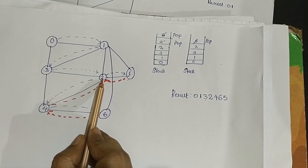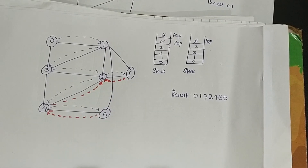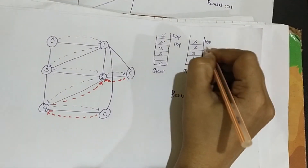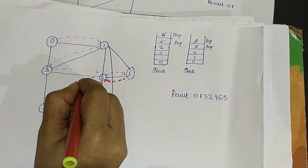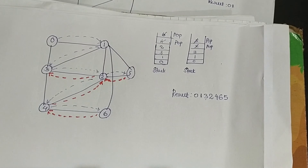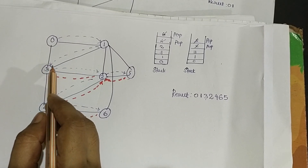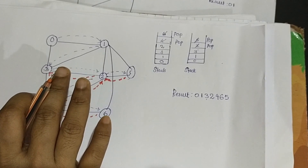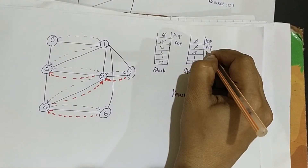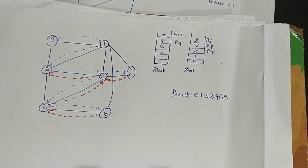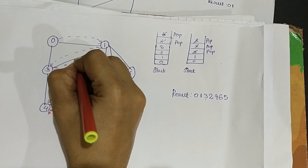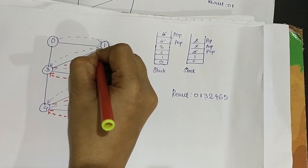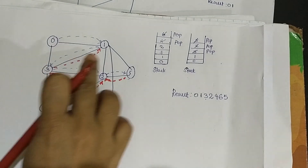From 2, we check whether there are any unvisited adjacent neighbors. There are none, so we pop 2 from the top of the stack and backtrack from 2 to 3. From 3, we check whether there are any unvisited vertices. There are none, so we pop 3 and backtrack towards where it came from — that is, node 1. We backtrack from 3 to 1.